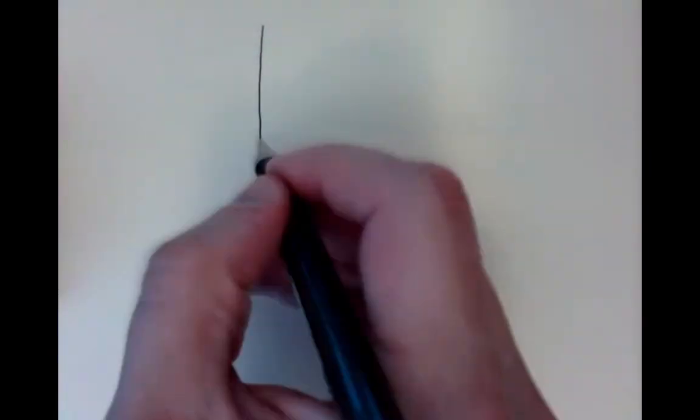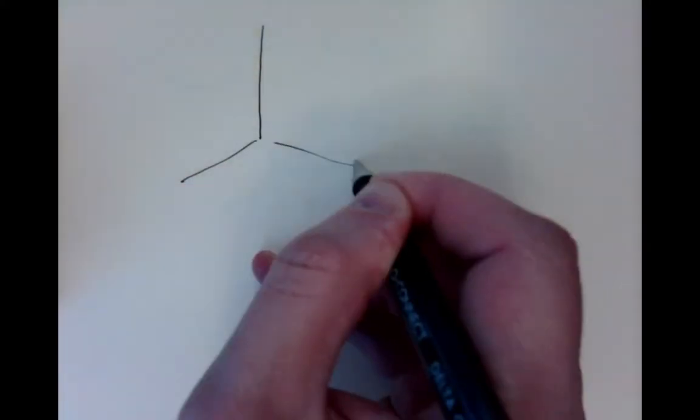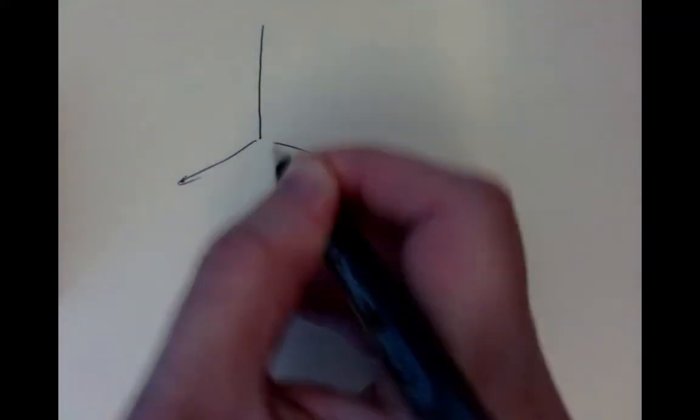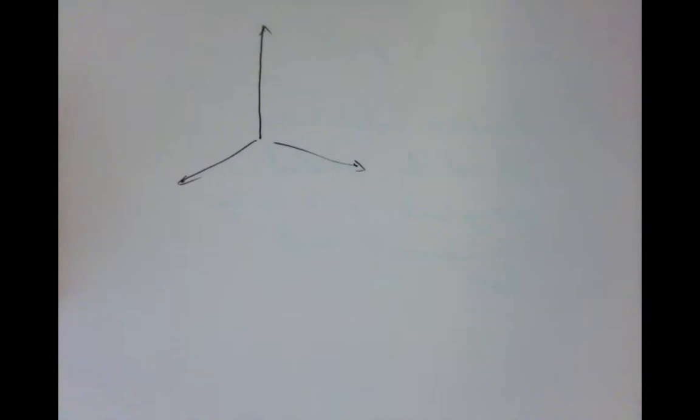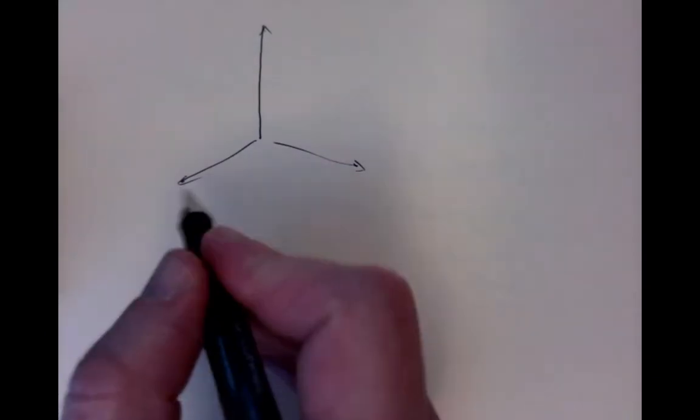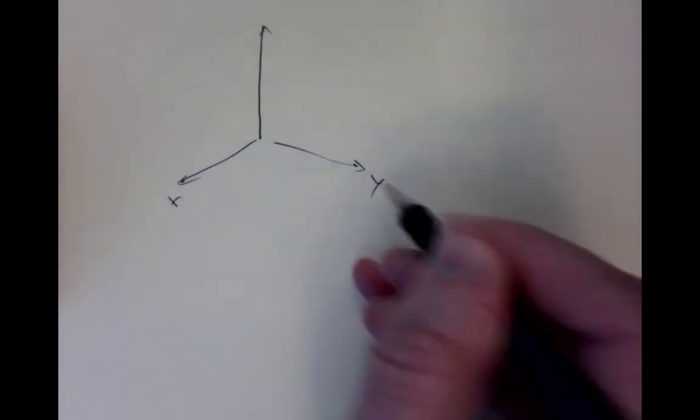This is the eighth lecture for MA1012. In this lecture, we'll think about vectors. The vectors we'll think about will be in three-dimensional Euclidean space, with three coordinate axes which we'll label as x, y, and z axes.